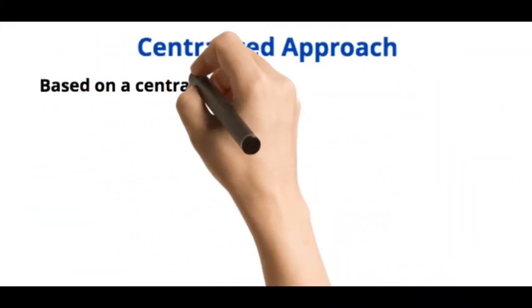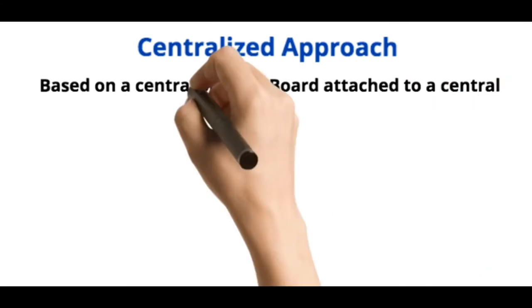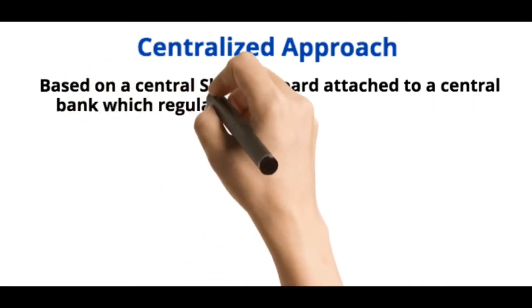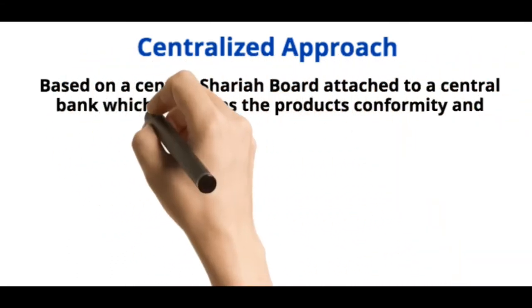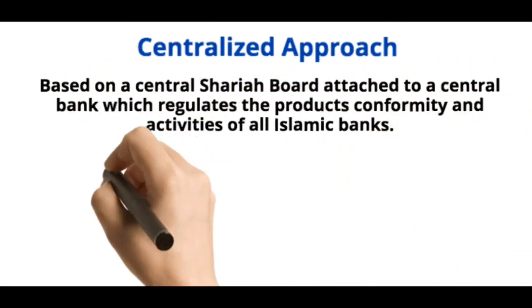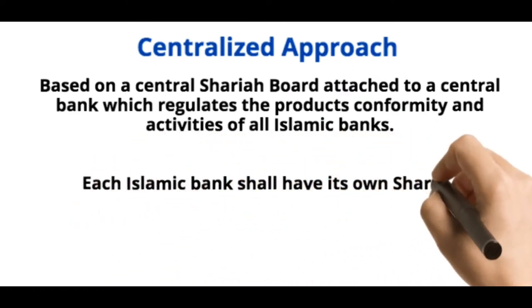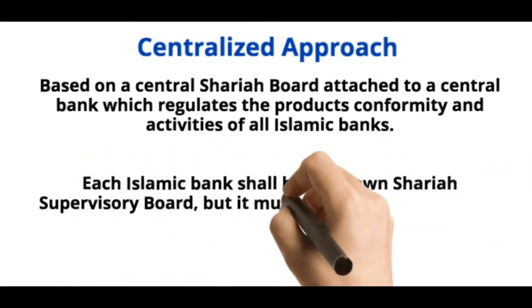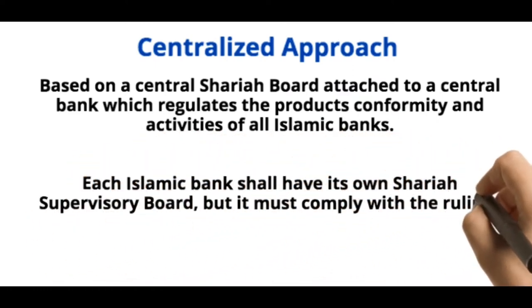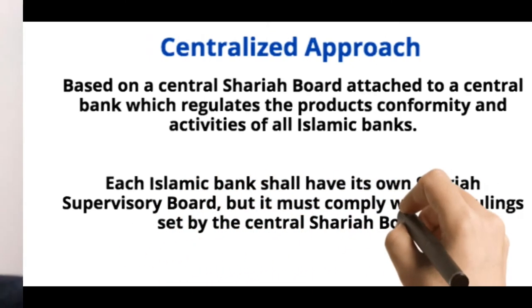A centralized approach is based on a Central Sharia Board attached to a central bank which regulates the product conformity and activities of all Islamic banks. Each Islamic bank shall have its own Sharia Supervisory Board but it must comply with the ruling set by the Central Sharia Board.